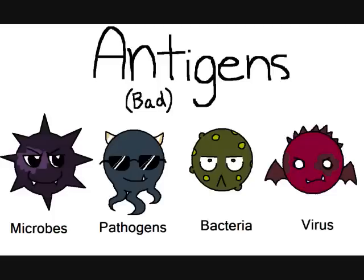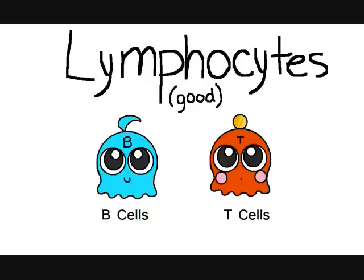It's pretty basic. You have the mean and ugly bad guys called antigens, which are made up of microbes, pathogens, bacteria, and viruses. Then you have the cute adorable good guys called lymphocytes, which are made up of B cells and T cells.